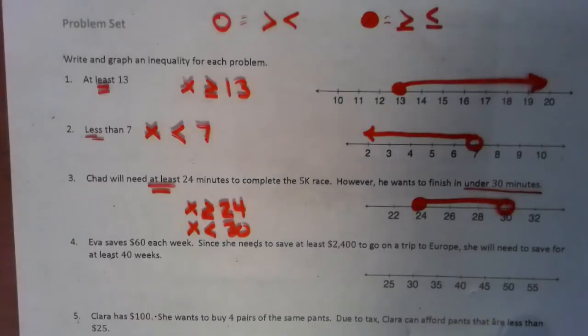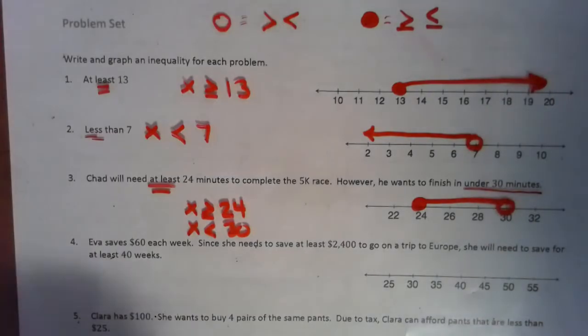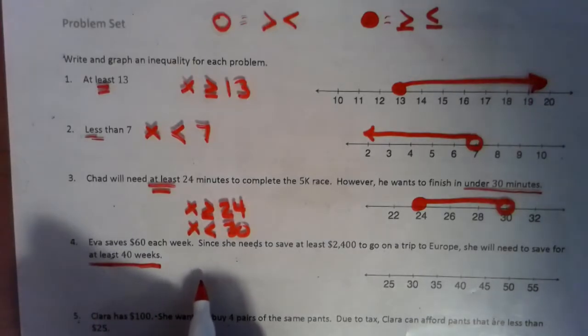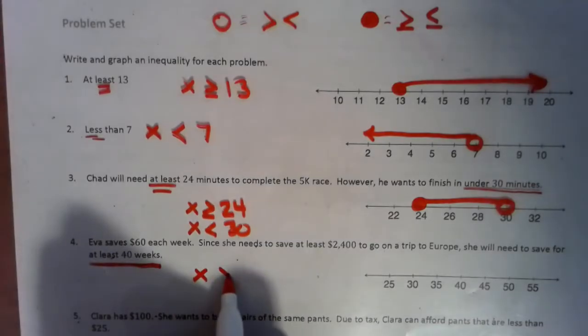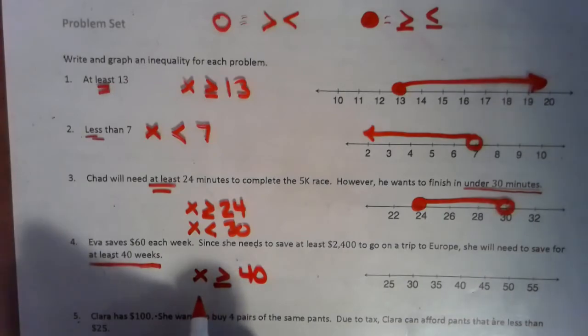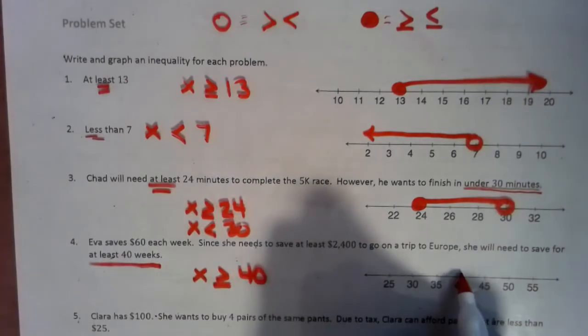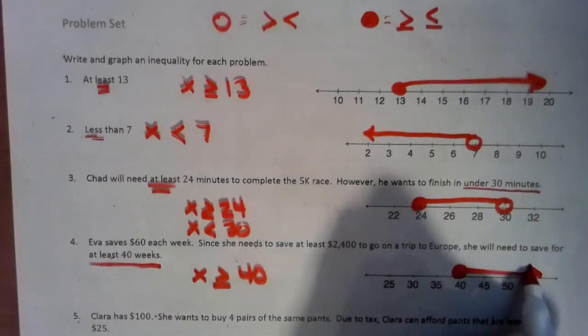So Eve saves $60 each week. Since she needs to save at least $2,400 to go on a trip to Europe, she will need to save at least $40 a week. So at least means she needs to save at least, so $40 is your minimum, so she has to save $40 or more every week. So that's a colored in circle shooting that way.